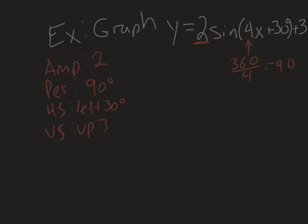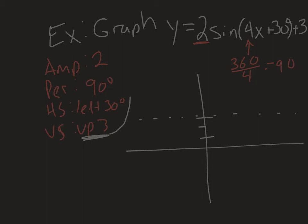Working up the list: the horizontal shift moved it left 30 degrees, so I make a tick at negative 30 degrees — this is essentially my new zero point. Since we're talking about sine, it starts at the midline, so the horizontal shift tells me where it starts at the midline.